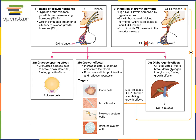Growth hormone is secreted by the anterior pituitary in response to growth hormone-releasing hormone (GHRH), secreted from neurons in the hypothalamus into the hypophysial portal system. When GHRH binds to receptors on cells in the anterior pituitary, those cells release growth hormone, which then binds to receptors on cells throughout the body. When growth hormone binds to receptors on adipose tissue, it stimulates the breakdown of fat, releasing fat molecules that can be broken down to release energy to fuel growth.